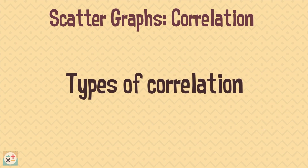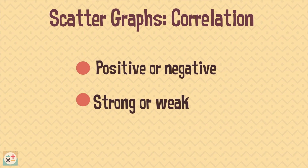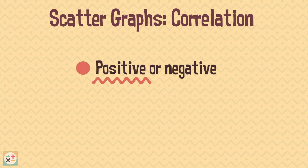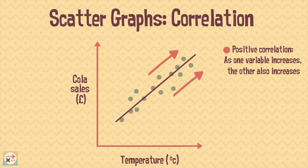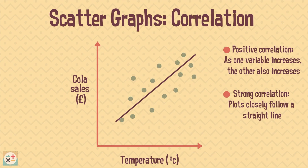There are different types of correlation: positive or negative, and strong or weak. Let's have a look at positive correlations. This scatter graph shows that there is a positive correlation, because cola sales increase as the temperature increases — both variables increase. We can also say that this is a strong correlation as the plots closely follow the line of best fit. If the plots were more spread out, we would say there is a weak correlation.